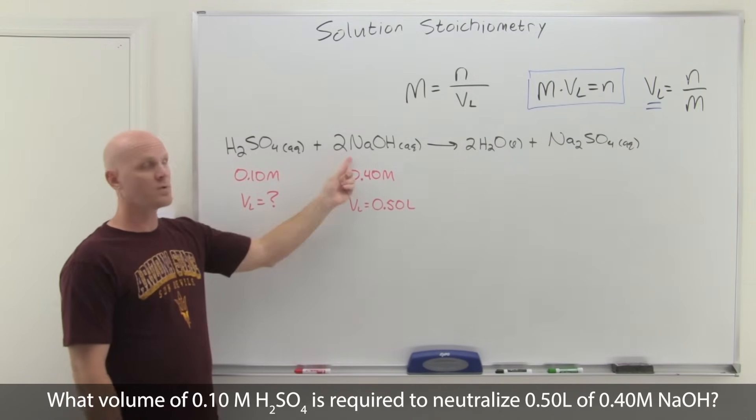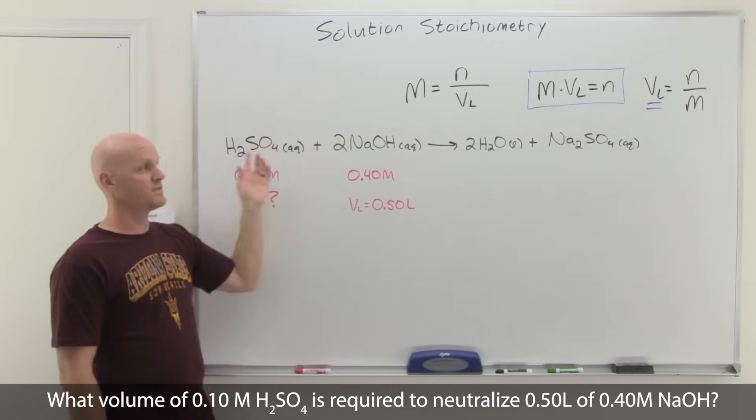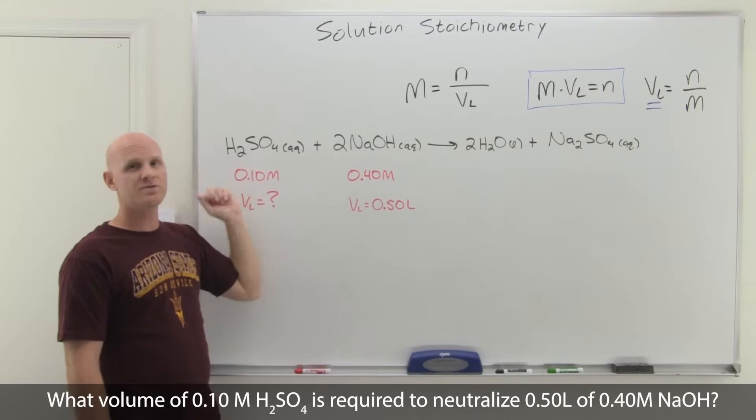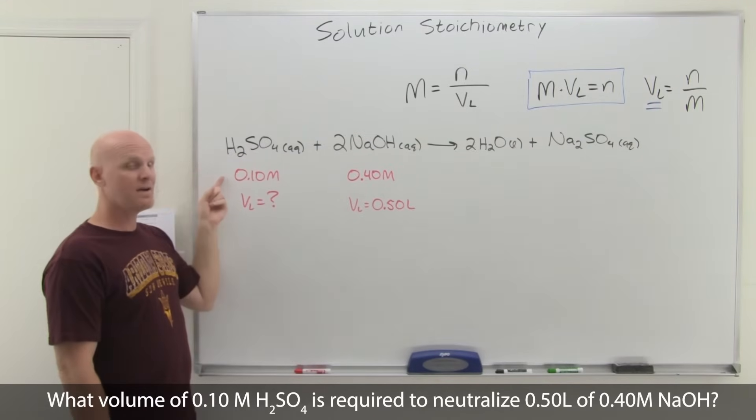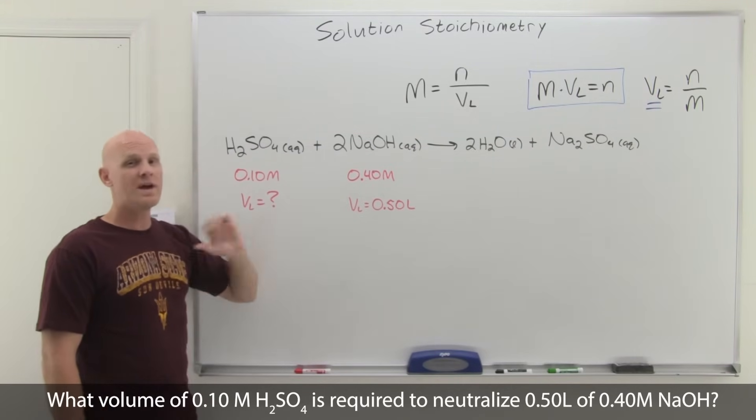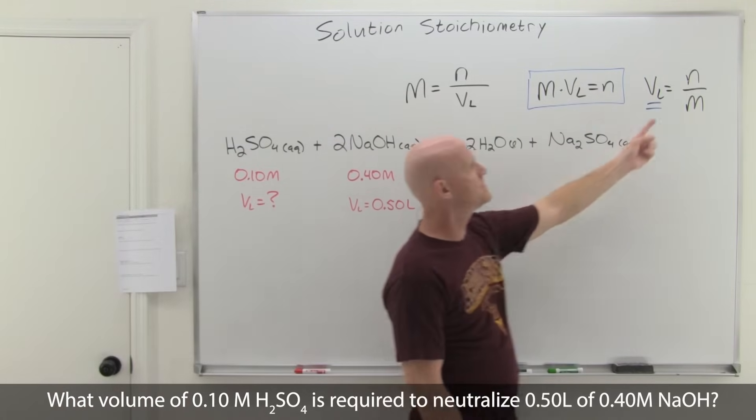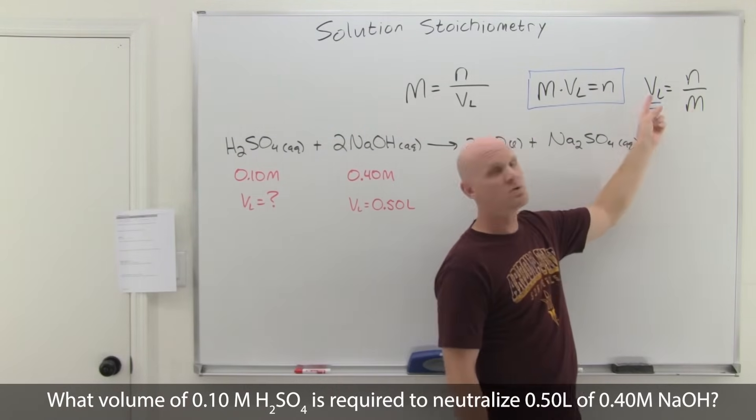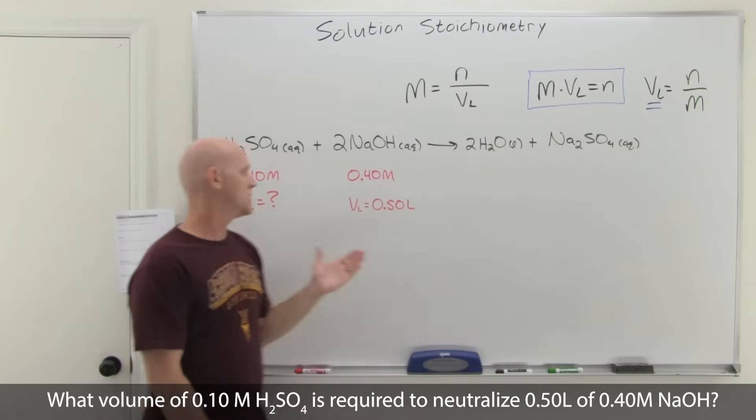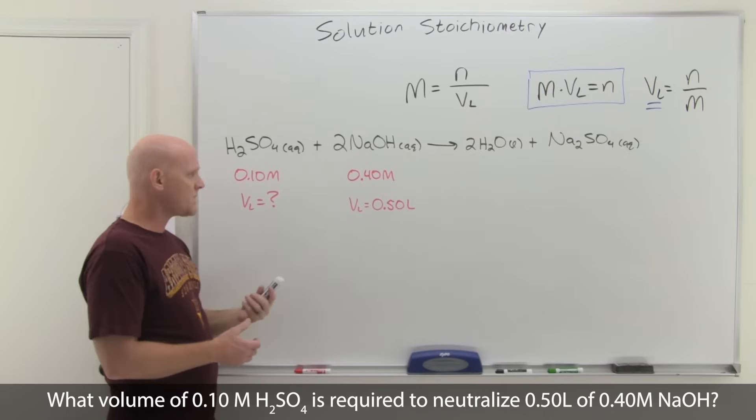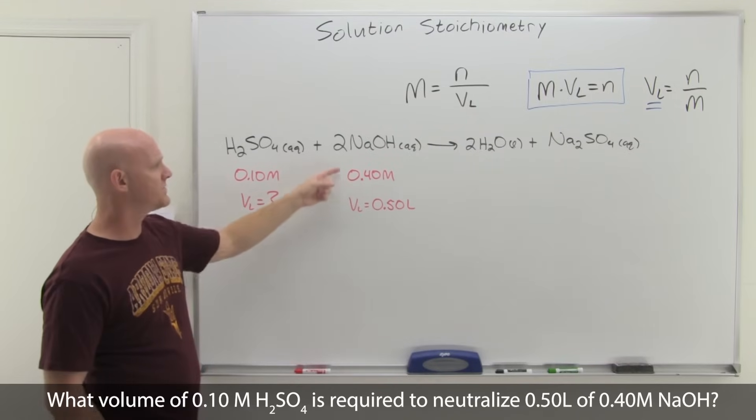Once you know the moles, you can take advantage of mole-to-mole ratios like we're going to do here. You want to realize that you were effectively given the moles of NaOH. Because we have a mole-to-mole ratio with the balanced reaction, we can turn that into moles of anything else in the reaction, in this case the moles of H2SO4. We're given the molarity of the H2SO4. We know we have enough to calculate the moles. And if you have both the moles and the molarity, you can solve for the volume.